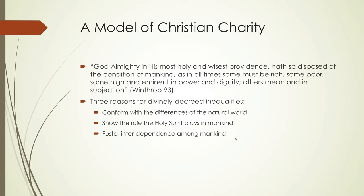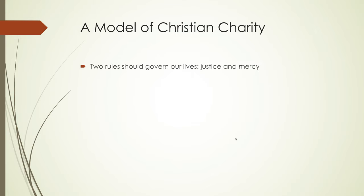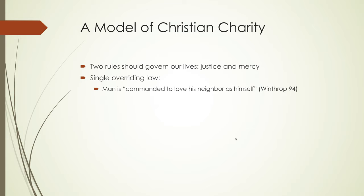The third reason Winthrop gives for God's decreeing inequalities is to foster an interdependence among mankind. He says that "every man might have need of other, and from hence they might be all knit more nearly together in the bonds of brotherly affection." Winthrop explains that wealth should not be purely for the benefit of the rich, but for "the glory of his creator and the common good of the creature, man." He then moves on to explaining that "there are two rules by which we are to walk towards another: justice and mercy," which should govern all of a community's interactions and be observed by both the rich and the poor. These two rules can be summarized in a single overriding law: man is "commanded to love his neighbor as himself."